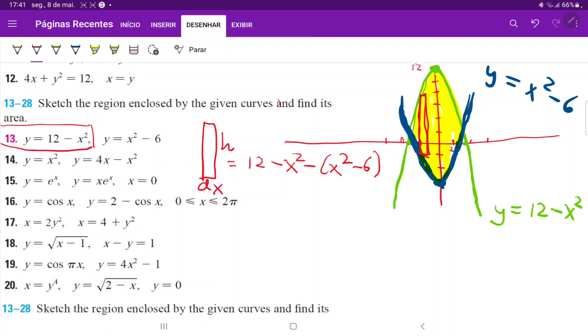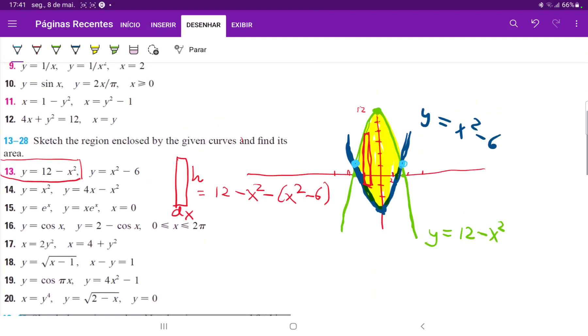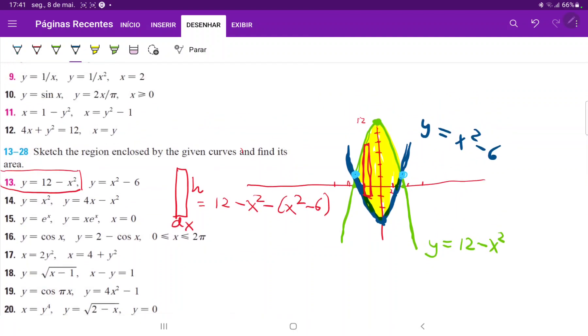And now to set up our integral, we do need to find the bounds of integration. So the bounds of integration are defined by these points over here where the curves intersect. We don't know where these points are, so we do have to set these equations equal to each other to find out. And we do set these equations equal to each other because their y value is the same at this x value.